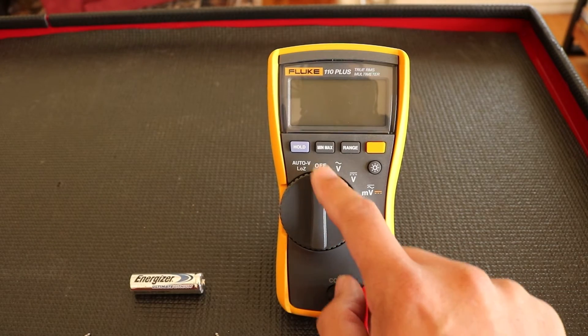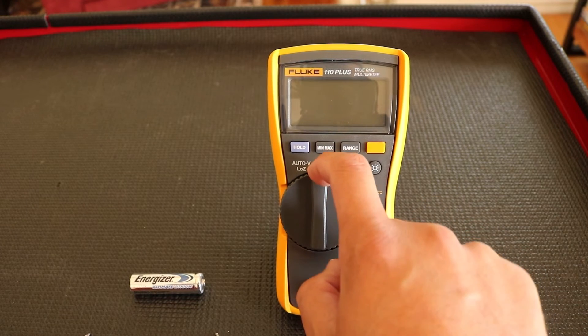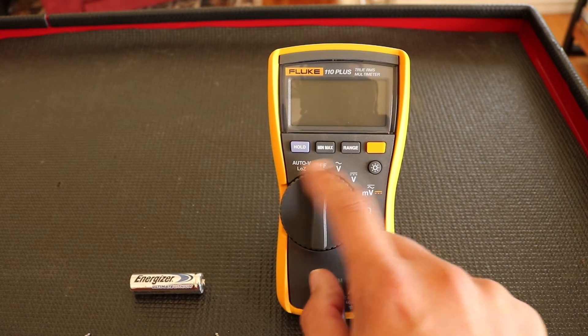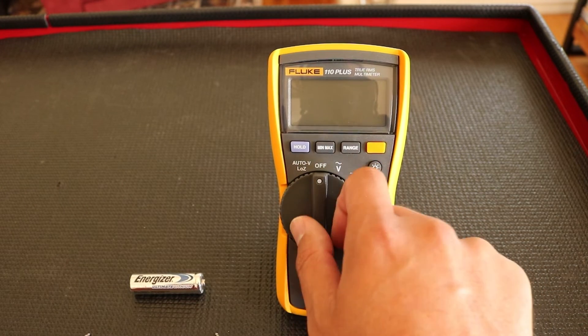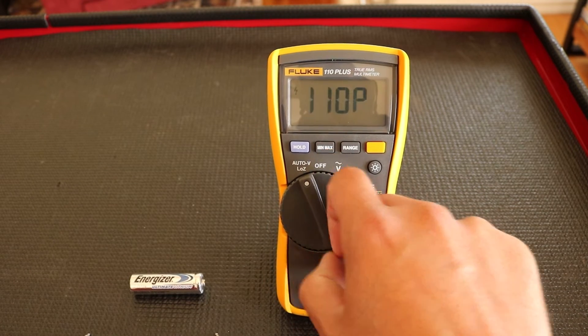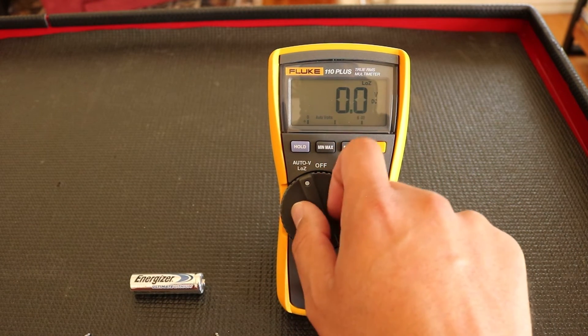We're going to start off with off. That's pretty self-explanatory, that turns off the unit. But we're going to start from left to right. So let's start with the auto button, the auto V position.